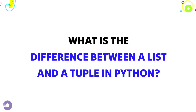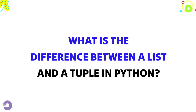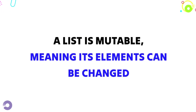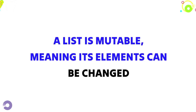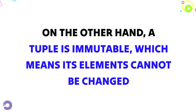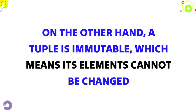Question 1: What is the difference between a list and a tuple in Python? Answer: A list is mutable, meaning its elements can be changed. On the other hand, a tuple is immutable, which means its elements cannot be changed.